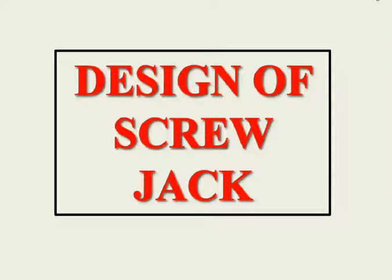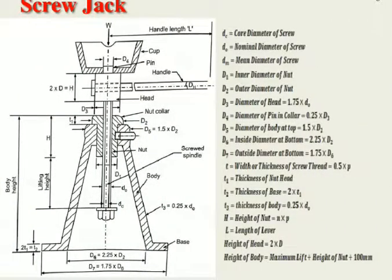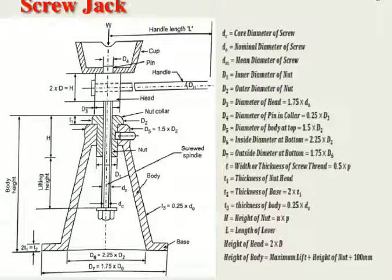Good morning students. Today we will have another lecture on design of machine elements, and today's topic is the design of a screw jack. This is the basic 2D diagram — a one-side view of a screw jack — where all the dimensioning is mentioned. Starting from the top, the load W is attached at the upper end; the parts include the cup, pin, handle, nut section, and screw.